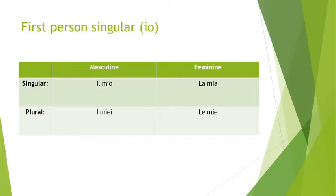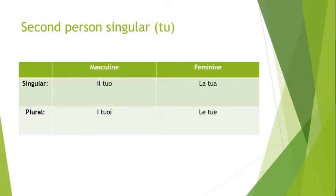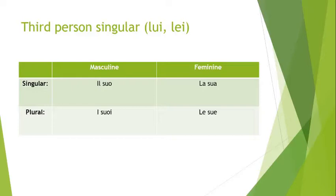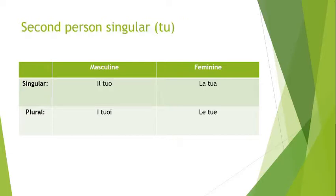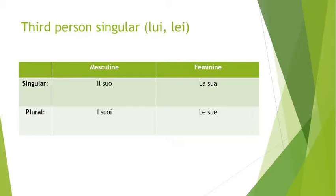Masculine singular: il mio. Feminine singular: la mia. Masculine plural: i miei. Feminine plural: le mie. Don't worry — I'll give you all of these together at the end, so you can write them down then. Second person singular: il tuo, la tua, i tuoi, le tue — you can see it follows the same pattern as il mio. Third person singular — this is the same for he or she: il suo, la sua, i suoi, le sue. The 'm' just became an 's' — exactly the same pattern.